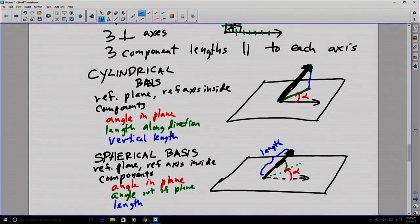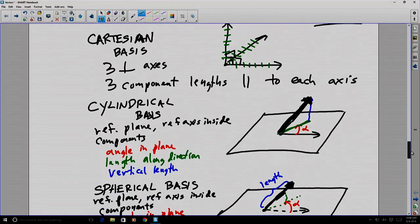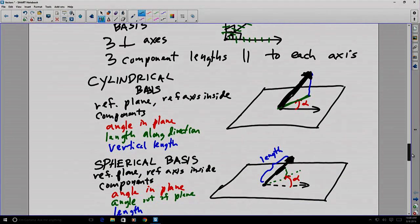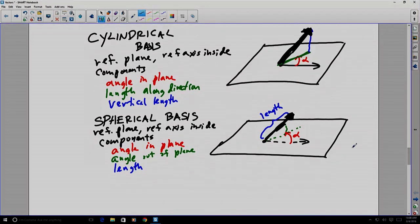Three different types of bases in 3D. And each of them requires three pieces of information. In the first case, you need three lengths. In the second case, you need one direction, an angle giving a direction, and two lengths. In the third case, you need two angles to define direction and one length.